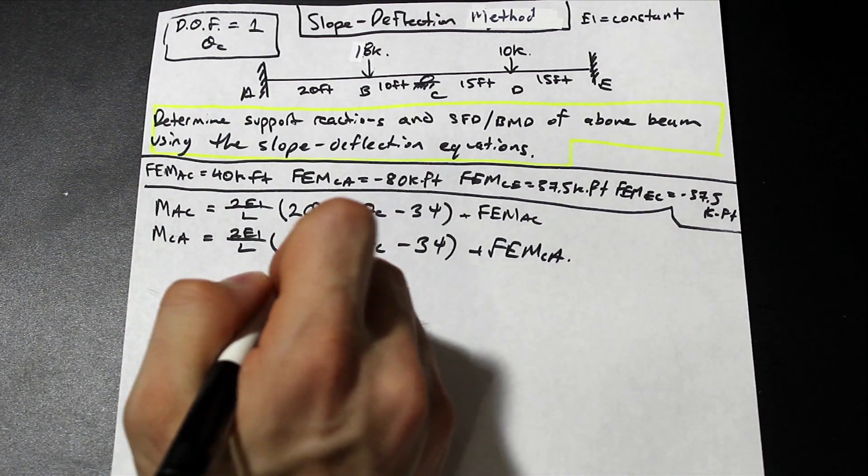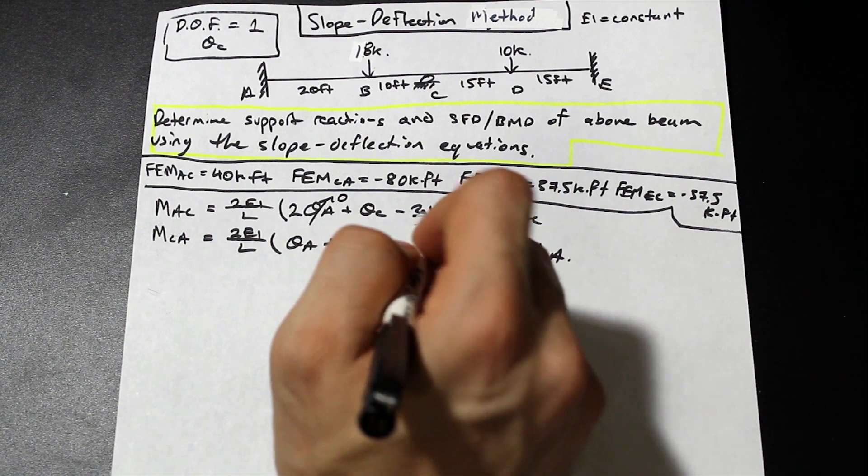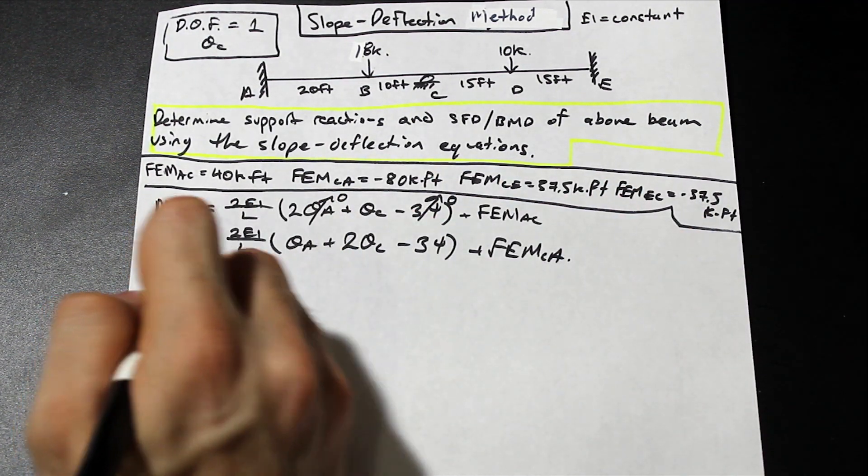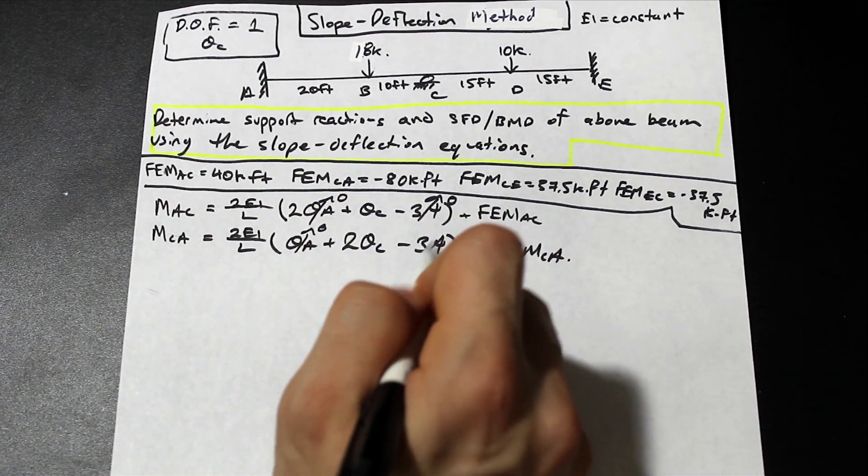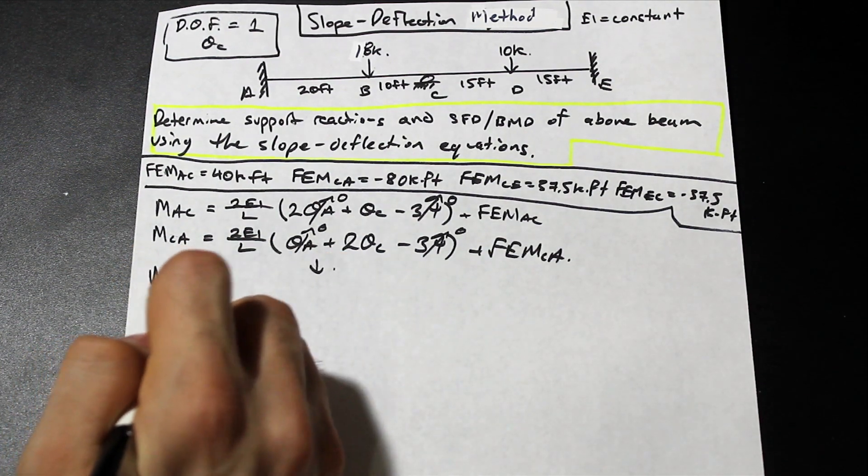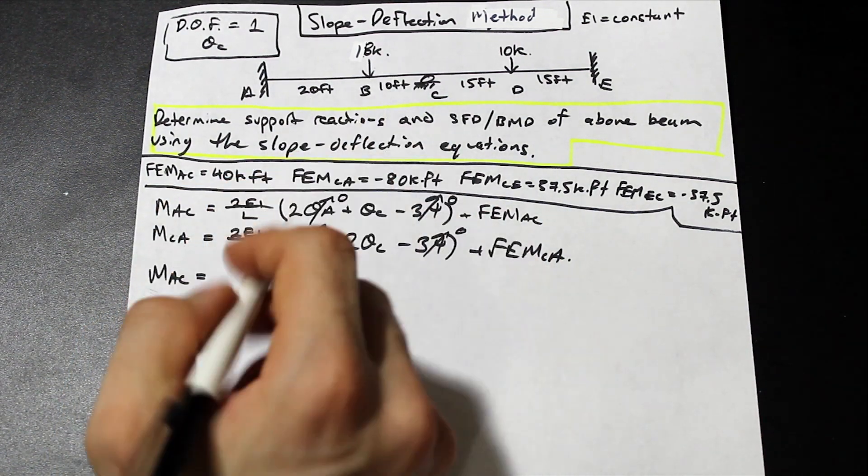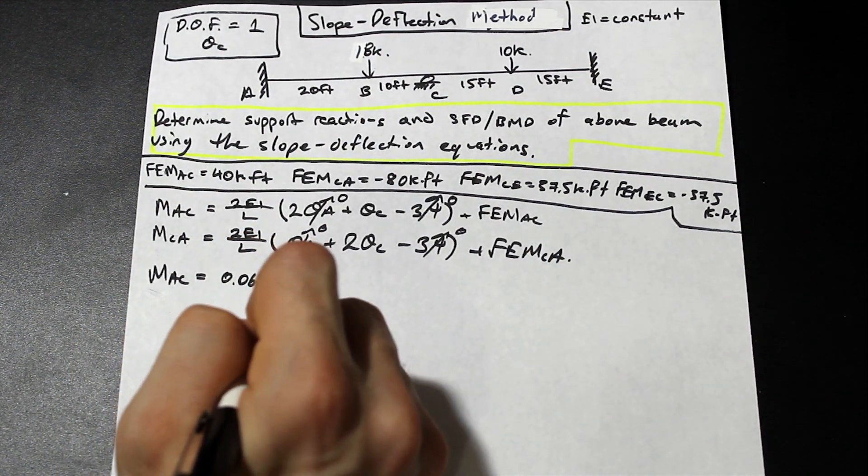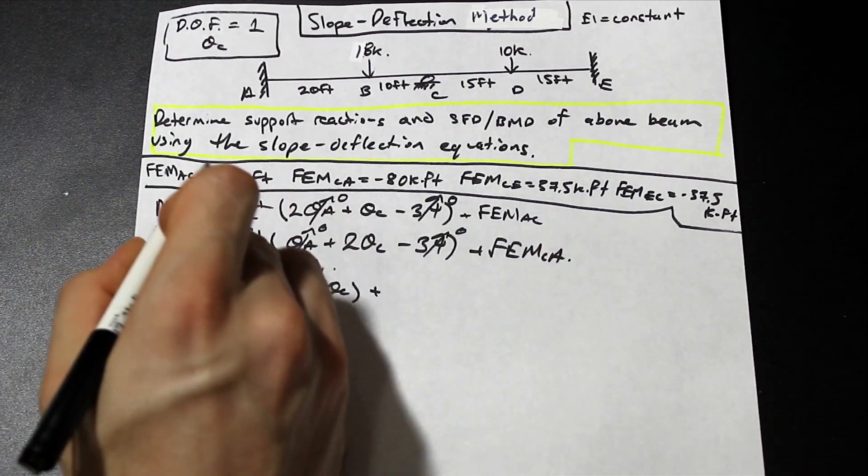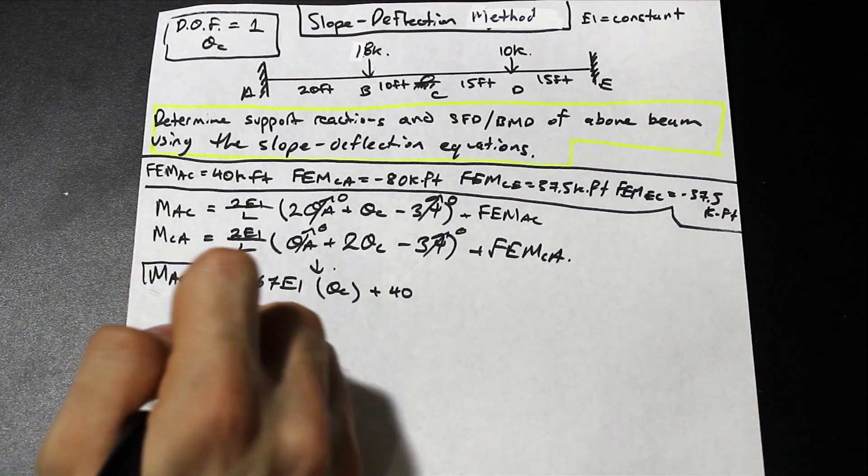Let's go over this, and maybe we can cancel a couple things. So we do know that the rotation at A is 0 because it's a fixed support. We don't have any settlement, so this always cancels when there's no settlement. And let's go down to CA, same thing here. We don't have a rotation at A, and we don't have any settlement. So these formulas are going to reduce to MAC. And if we divide 2 by L, so if we plug in L here, that's 30, right, 20 plus 10. So we're going to have 0.0667EI times θC, plus FEMAC, which is 40. Cool, so that's the first slope deflection equation finished. Pretty simple, right?